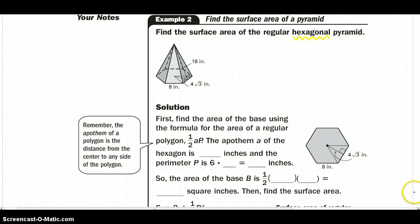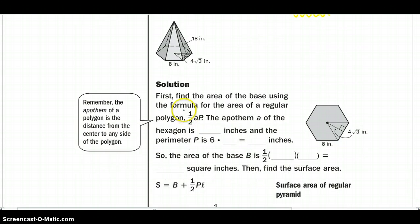First, we need to find the area of the base using our formula we learned last chapter. Remember, the A is our apothem that goes from the center to the side of the figure, and the perimeter is all the way around. So they have given us our apothem, it is 4 square root of 3, and we can find our perimeter because we know that each side is 8 inches and we have 6 of those. So we can say 6 times 8, which would give us 48 inches. Now we need to find the B, our area of our base, so one half times our apothem times our perimeter, which would give us an area of 96 square root of 3, keeping that as exact as we can.